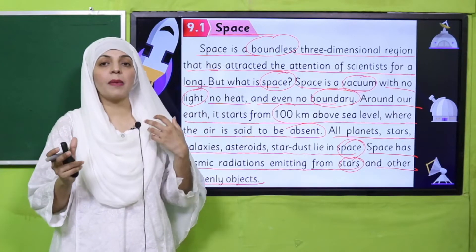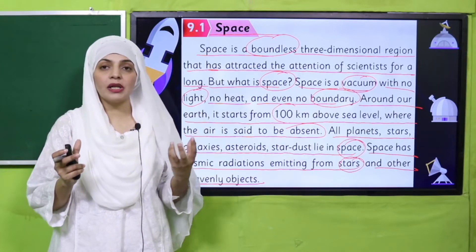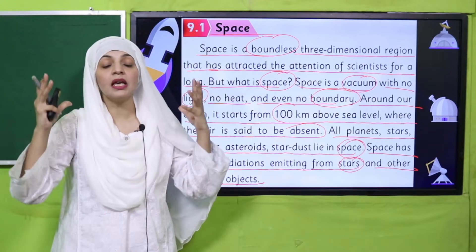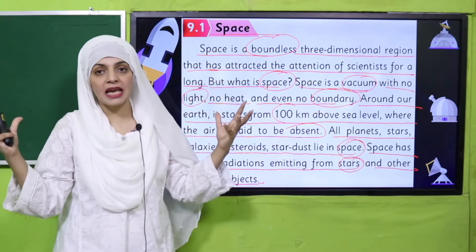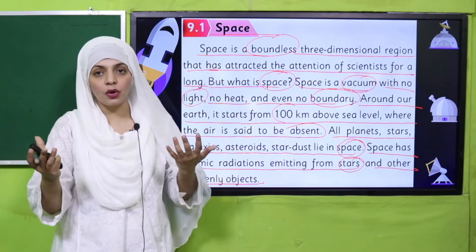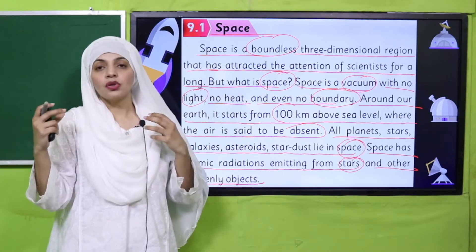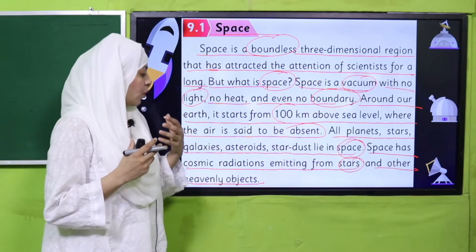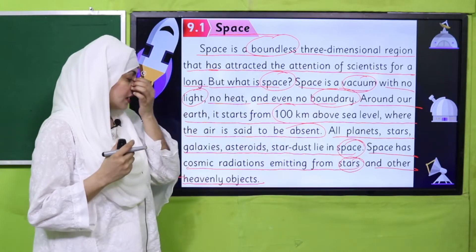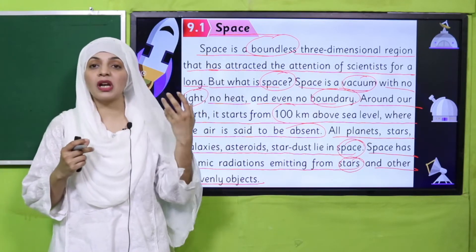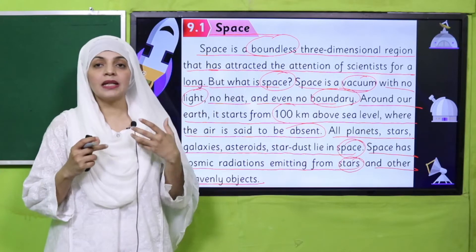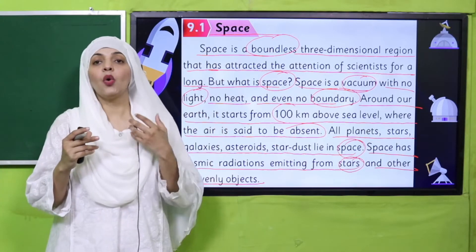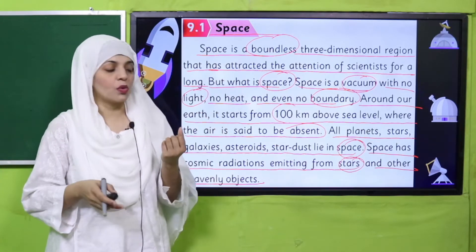Space has cosmic radiations emitting from stars and other heavenly objects. All galaxies, asteroids, planets, and stars exist in space — collectively they make up our universe. The radiations in space are cosmic radiations emitted from various stars, including our Sun and other stars.